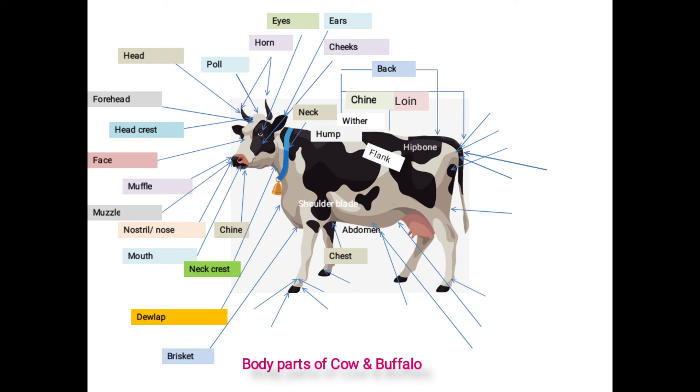Next one is shoulder. Uppermost portion of front legs called as shoulder, and flat triangular bones of the shoulder called as shoulder blade. Next one is arm: this is portion of legs in between shoulder and point of elbow called as arm. Next one is forearm and knee joint: the portion in between point of elbow and knee joint called as forearm, and joint between forearm and shank known as knee joint.